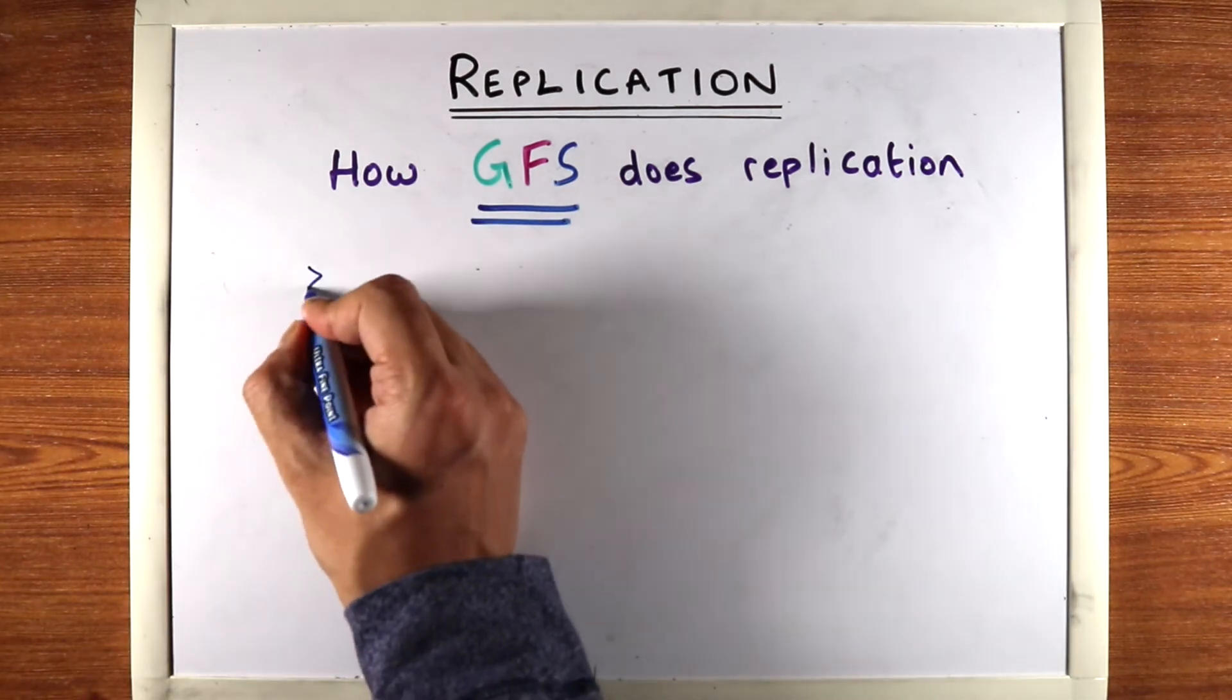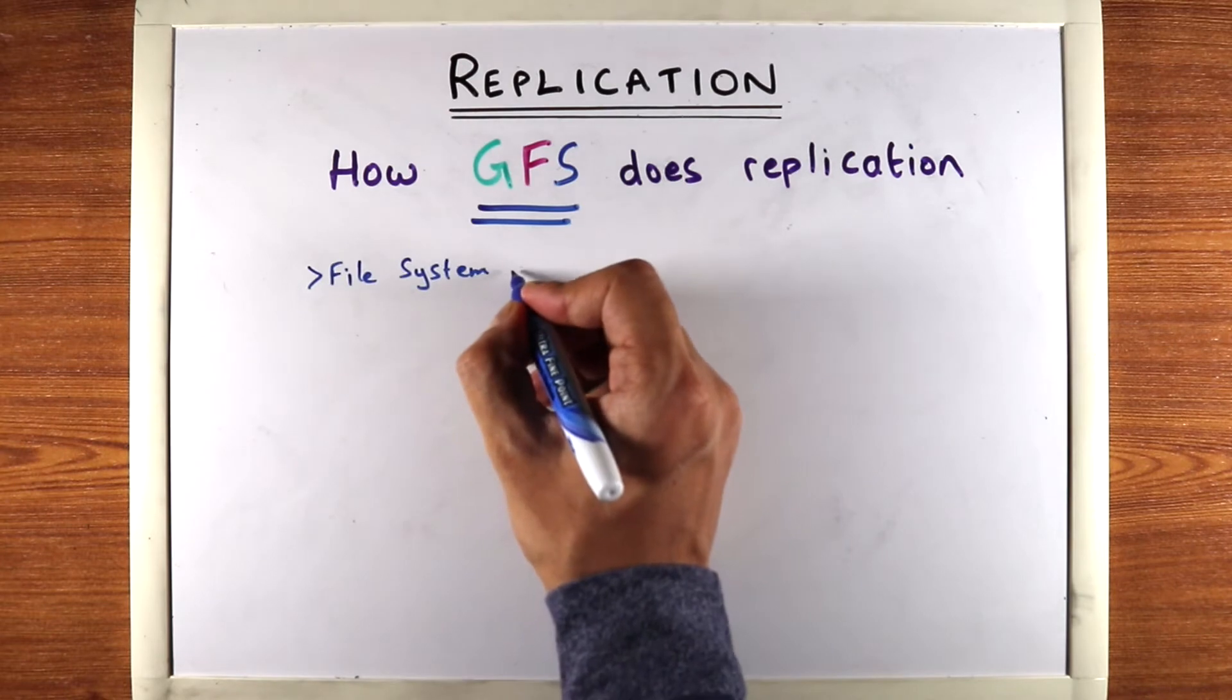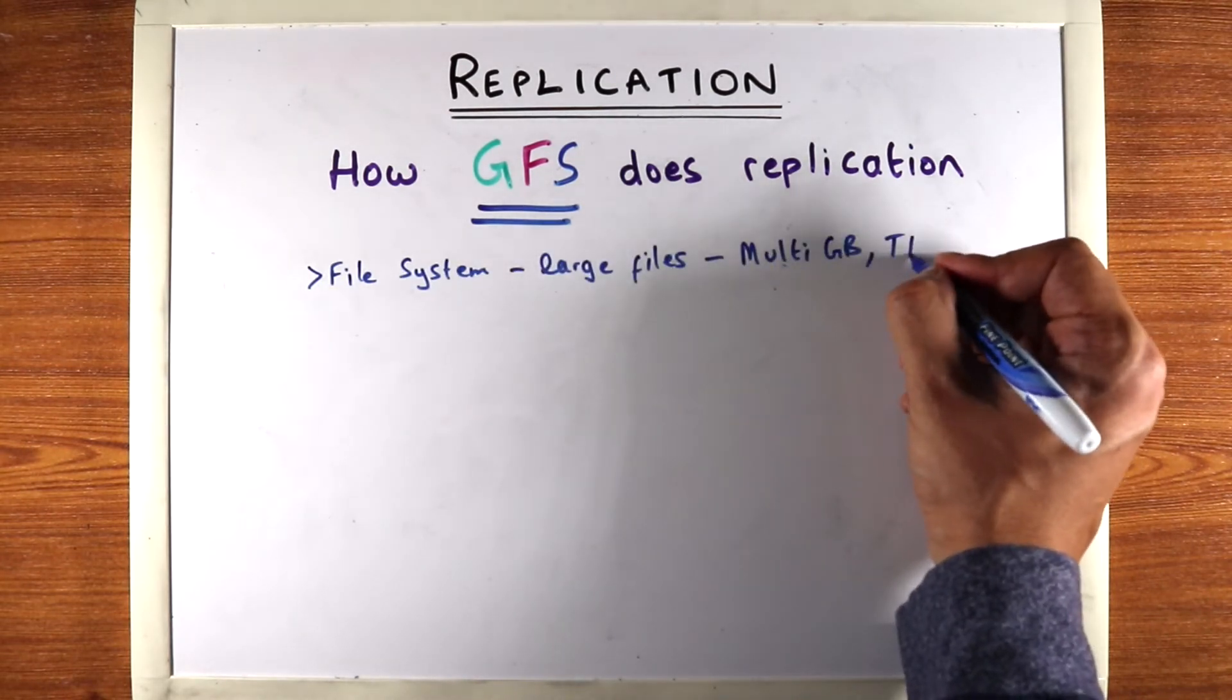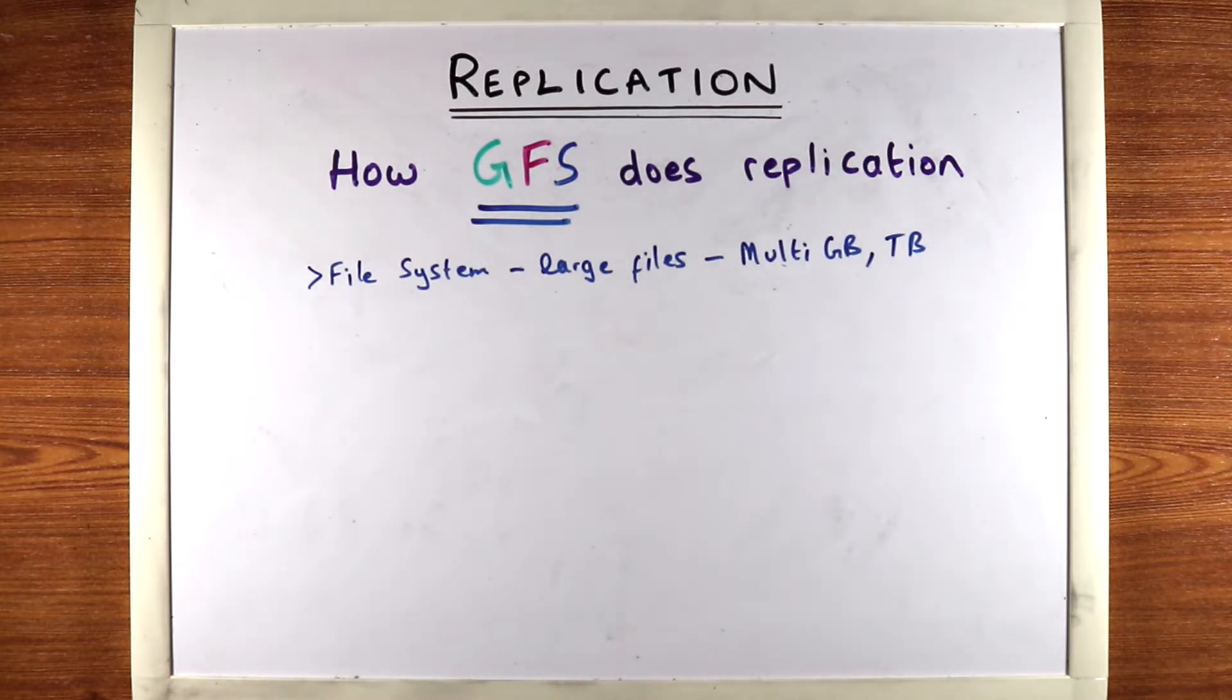As the name suggests, it's a file system and it's meant to store large files. The files can be multi-gigabyte and the data can be in the terabytes. So we're talking really large files, similar to files that Google uses to store the internet.